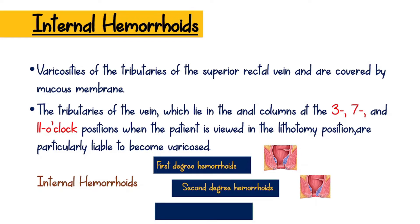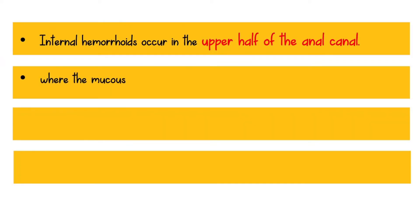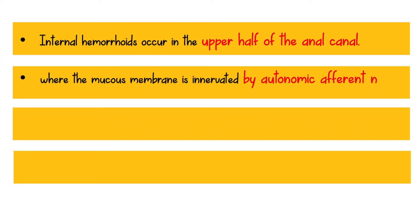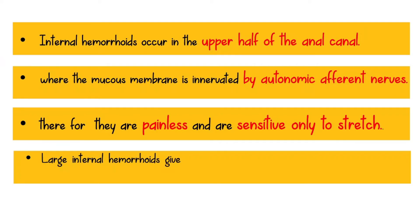Third-degree hemorrhoids, with further elongation, prolapse on defecation and remain outside the anus. Internal hemorrhoids occur in the upper half of the anal canal, where the mucous membrane is innervated by autonomic afferent nerves; therefore they are painless and sensitive only to stretch. Large internal hemorrhoids give rise to an aching sensation rather than acute pain.